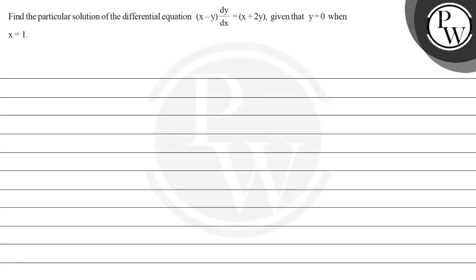Hello Bachcho, let's read the question: find the particular solution of the differential equation (x minus y) times dy/dx equals x plus 2y, given that y is 0 when x is 1.